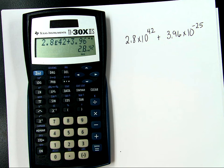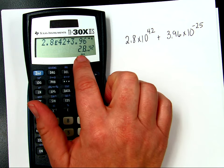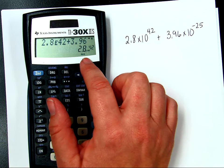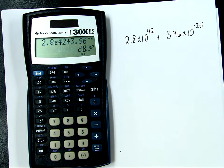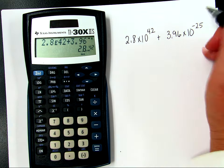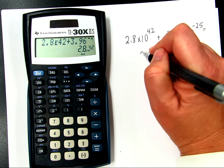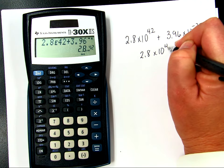And that gives me an answer. It happens to give me my answer as 2.8 times 10 to the 42, which is the correct answer. So my answer to this problem is 2.8 times 10 to the 42.